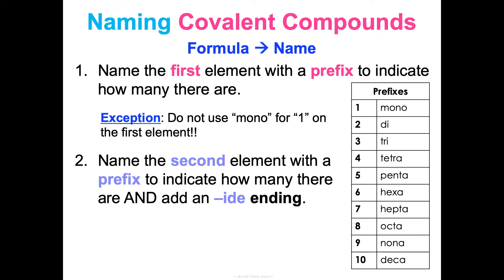And then you're going to name the second element with a prefix, and then you just add an IDE ending. So let's do an example. P2O5. So name the first element, phosphorus, with a prefix. So there's two of them, so we'll use di. So diphosphorus, and then name the second element, which is oxygen, with a prefix. There's five. So pentaoxygen, but then you need that IDE ending. So pentoxide. So diphosphorus pentoxide. And typically, if it's like an A and an O back-to-back, you just get rid of the A on these, if that makes sense.